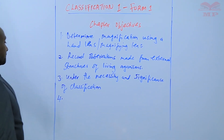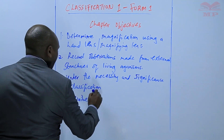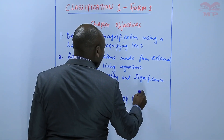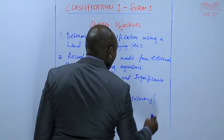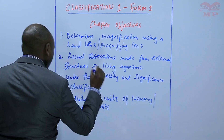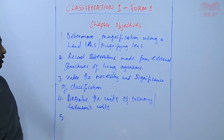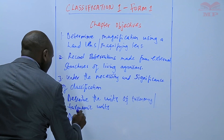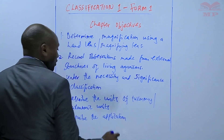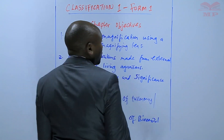Number four is to be able to describe the units of taxonomy, what are called the taxonomic units. And lastly, number five: a student should be able to describe the application of binomial nomenclature.